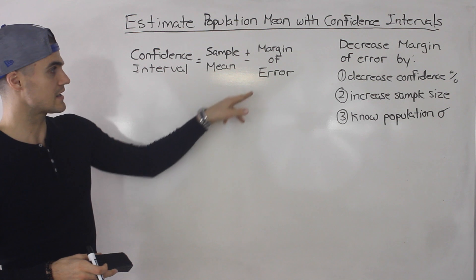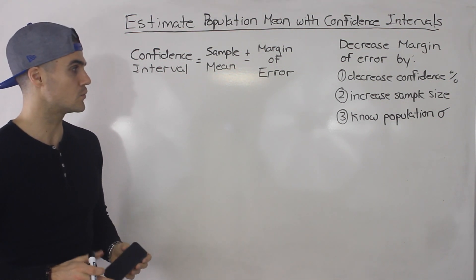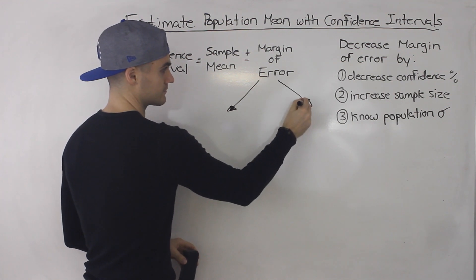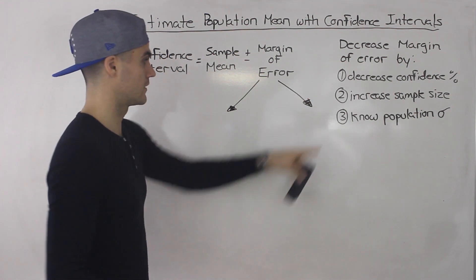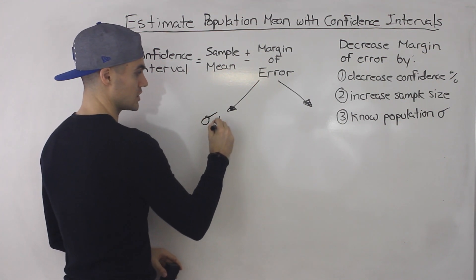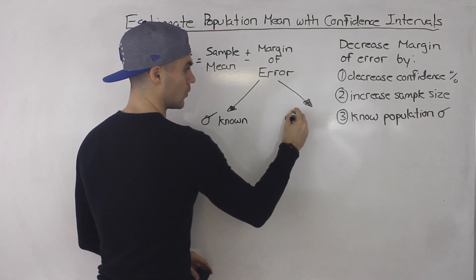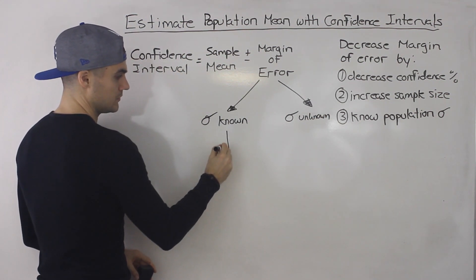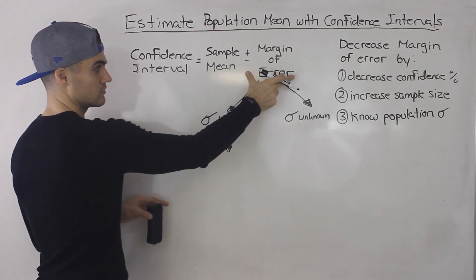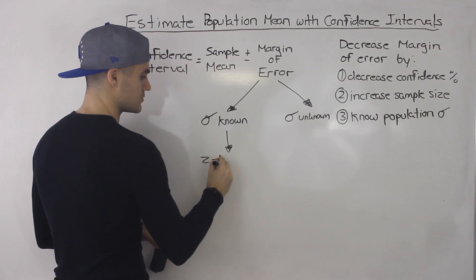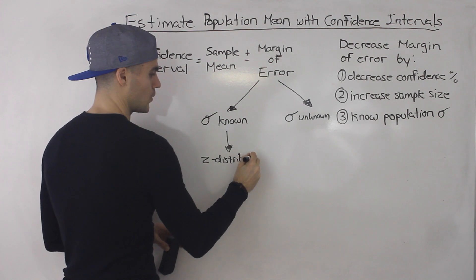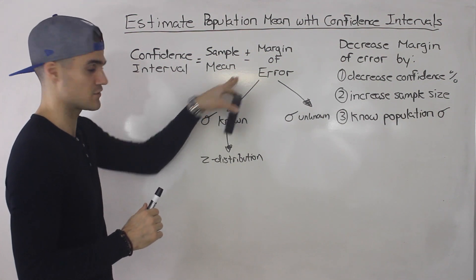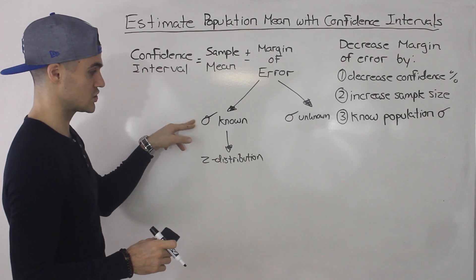Now I'm going to start breaking down the margin of error more technically to show how we can calculate it. The first thing the margin of error calculation depends on is whether the population standard deviation is known or unknown. If the population standard deviation is known, we're going to use the Z distribution, or the normal distribution, to calculate the margin of error.